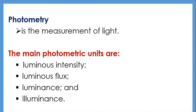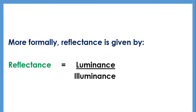Luminance depends on the light an object emits or reflects towards the eye and corresponds roughly to brightness. If the inside of a sphere is a perfect reflector of light, the luminance will be the same as the illuminance. The percentage of incident light reflected by a surface depends on the reflectance of the material. Reflectance is defined as the ratio of luminance to illuminance. White paper has a reflectance of about 95%, white cloth about 65%, newspaper about 55%, plain wood about 45%, and black paper about 5%.